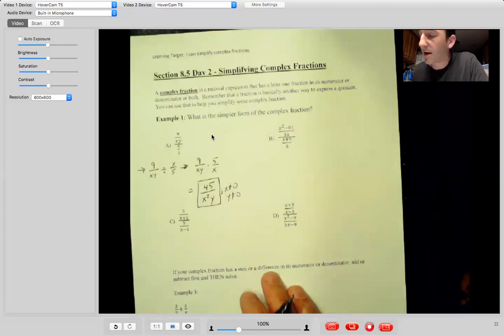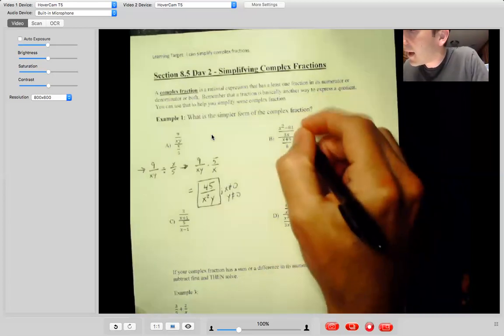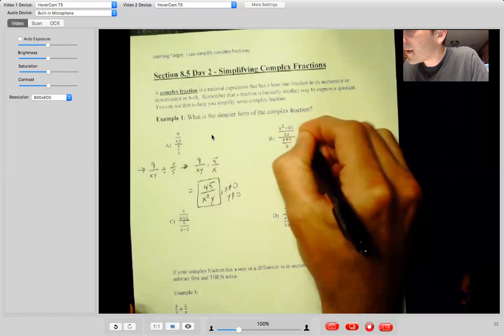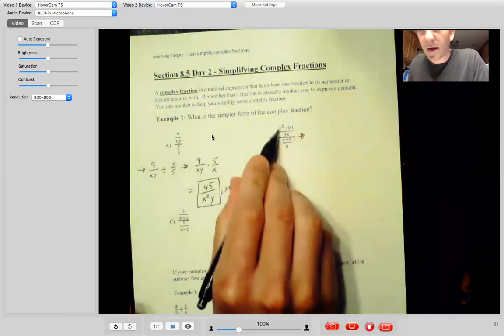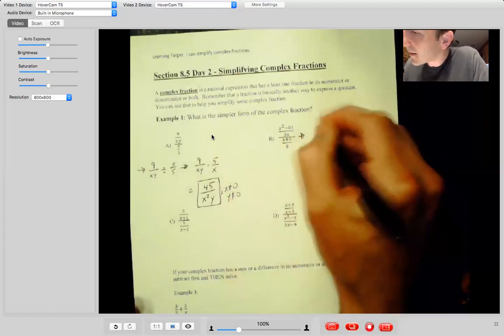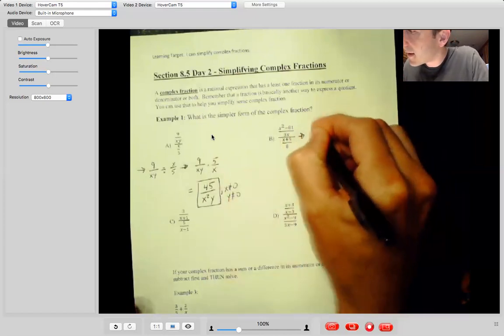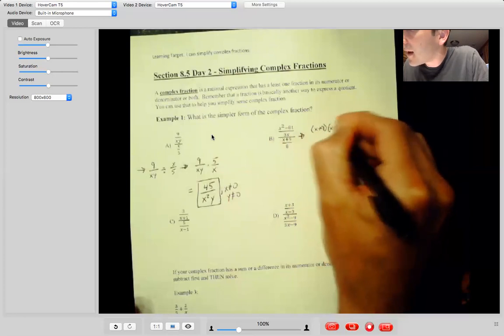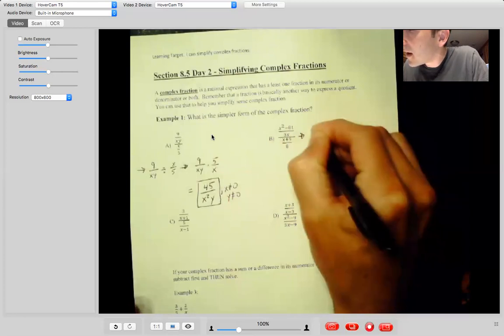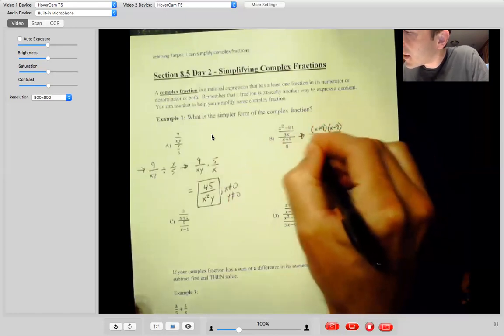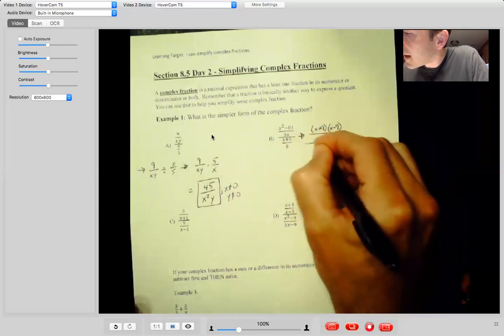Before we do same change flip, we want to go ahead and factor out everything that we can. You could factor really at any point, but we'll go ahead and factor first. So up there I have difference of squares. So A plus B times A minus B tells me that factors to X plus nine times X minus nine over three X. And that's all over X plus nine over eight.